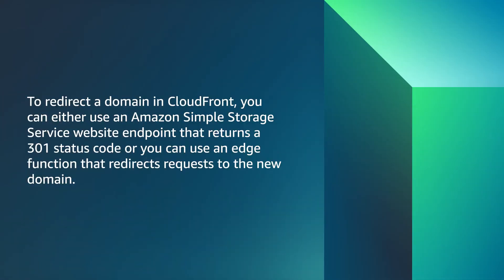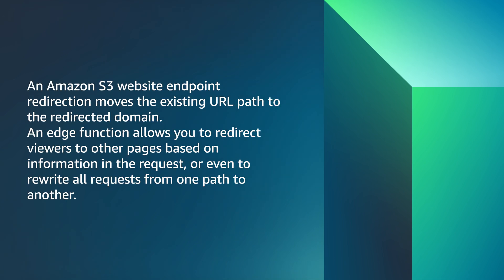To redirect a domain in CloudFront, you can either use an Amazon S3 website endpoint that returns a 301 status code, or you can use an edge function that redirects requests to a new domain. An Amazon S3 website endpoint redirection moves the existing URL path to the redirected domain, but an edge function allows you to redirect viewers to other pages based on information in the request, or even to rewrite all requests from one path to another.